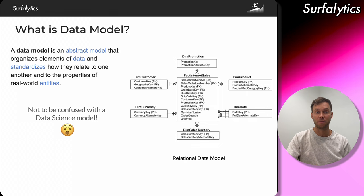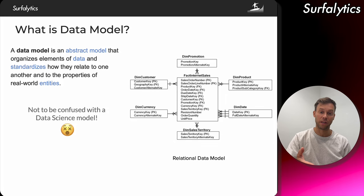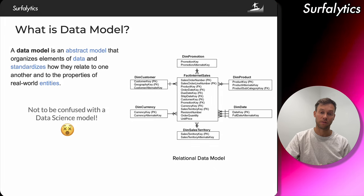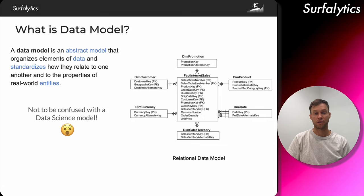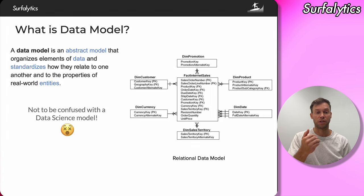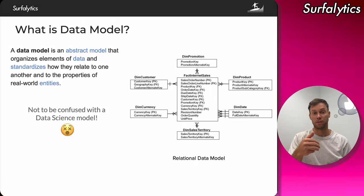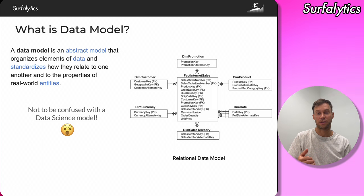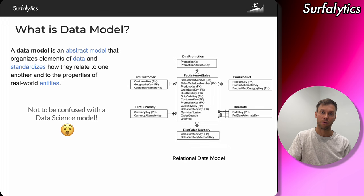Nowadays it's clear that the data model in data science or machine learning is different from data models in databases. In our case, we talk about data models or entity relationship diagrams, where we can visualize our tables, the structure of tables, and the columns. If you think about spreadsheet world — Microsoft Excel or Google Sheets — if you look at DimCustomer, you can imagine a spreadsheet with the tab named DimCustomer and three columns: customer key, geographic key, customer alternate key. That's how you define relationships, and you can mimic the same example in a spreadsheet.